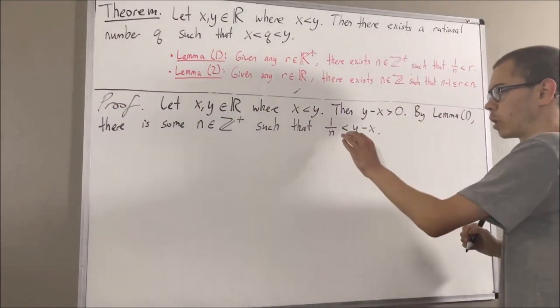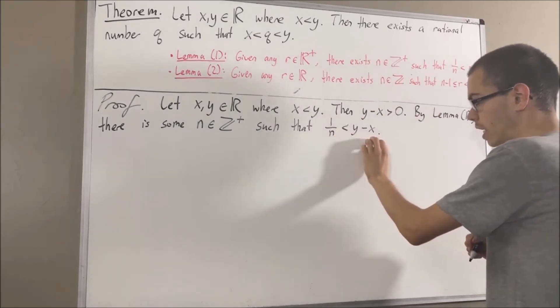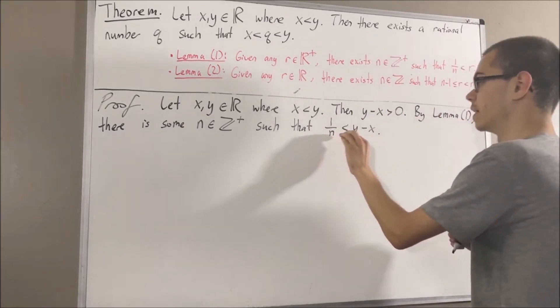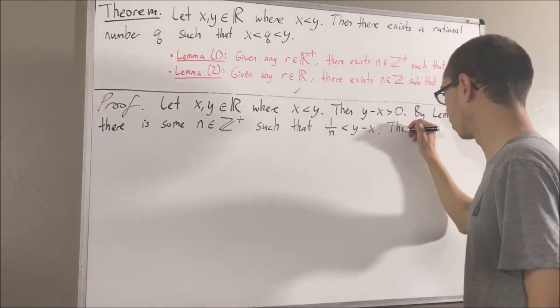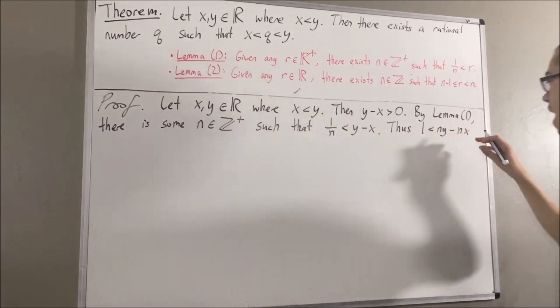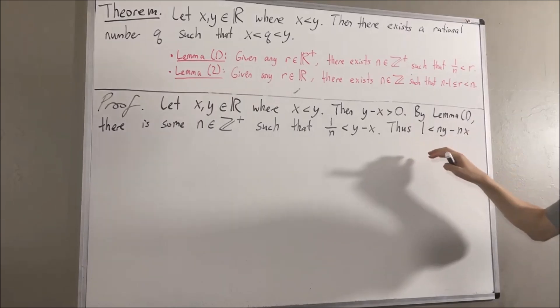And then we can multiply the positive number n on both sides, and we get that 1 is less than ny minus nx. Then, adding nx on both sides, we get nx plus 1 is less than ny.